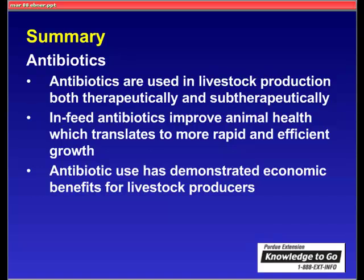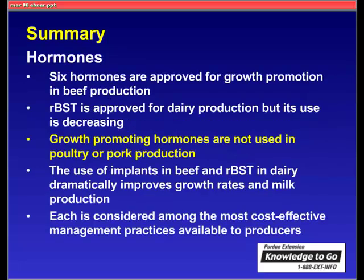To summarize: antibiotics are used in livestock production both therapeutically and subtherapeutically. In-feed antibiotics improve animal health, translating to more rapid and efficient growth, and have a demonstrated economic benefit for livestock producers. In terms of hormones, six are currently approved for growth promotion in beef production; RBST is approved for dairy but its use is decreasing; and growth-promoting hormones are not used in poultry or pork production. The use of implants in beef and RBST in dairy dramatically improves growth rates and milk production respectively, and each is considered among the most cost-effective management practices available to producers.